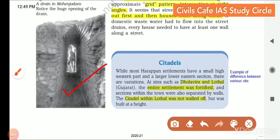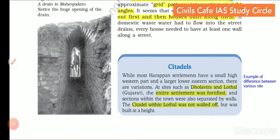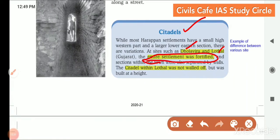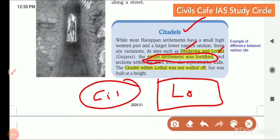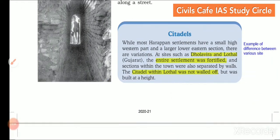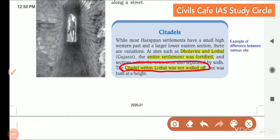This is the image of drainage in Mohenjo-Daro — almost 6 feet in height, large enough to carry enough waste. The citadel structure varied across Harappan sites. At sites such as Dholavira and Lothal, the entire settlement was fortified, whereas in the general case only the citadel and lower town were separately walled. Sections within the town were also separated by walls. The citadel within Lothal was not walled off separately.